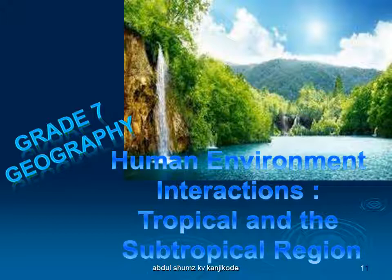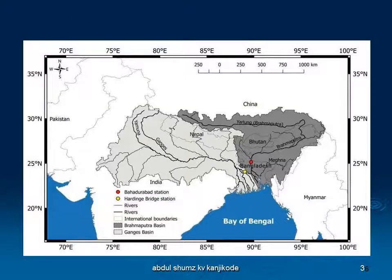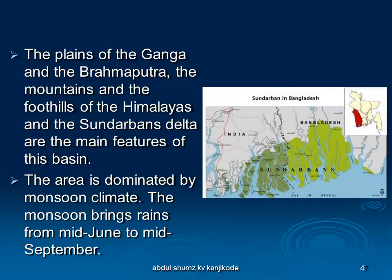As clearly shown in the map in your book, the tributaries of river Ganga — like Ghagra, Son, Kosi, etc. — and the tributaries of Brahmaputra drain this basin. If you see the map it will be very clear, showing the tributaries of both river Ganga and river Brahmaputra. The plains of the Ganga and Brahmaputra, the mountains and foothills of the Himalayas, and the Sundarbans Delta are the main features of this basin.